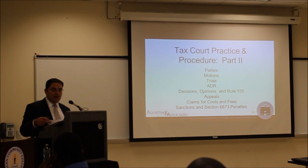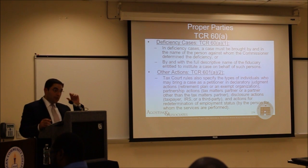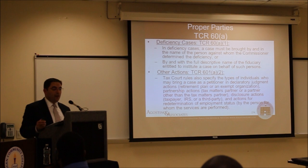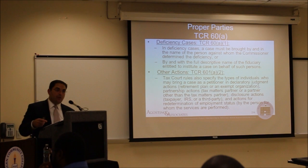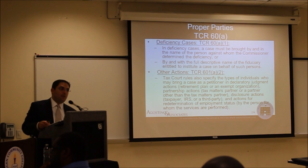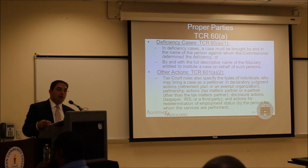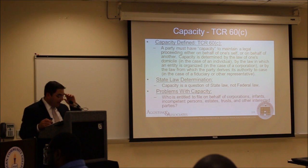With respect to parties in a deficiency case, the case must be brought by and in the name of the person against whom the IRS determined the deficiency, or by the fiduciary entitled to institute a case on behalf of that person. The proper party before the court is the party named in the pleading — in the operative notice. The real exception is if someone has passed away and you have an authorized fiduciary under state law to come in and prosecute the case on behalf of the otherwise proper party.